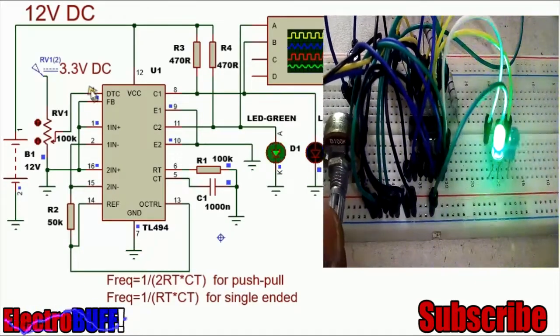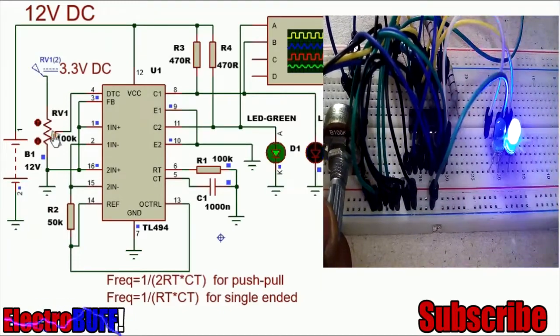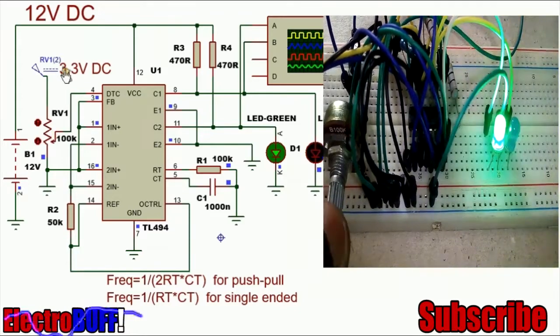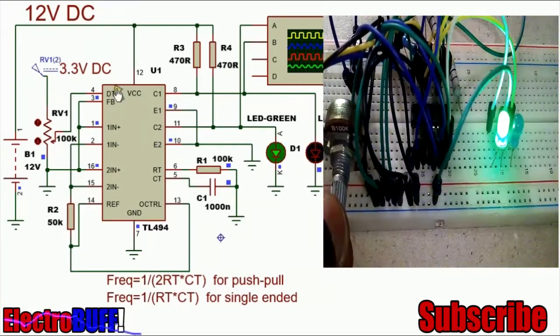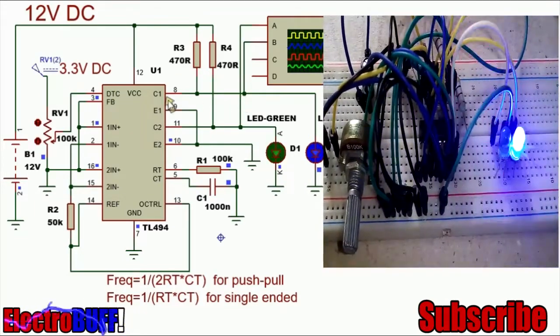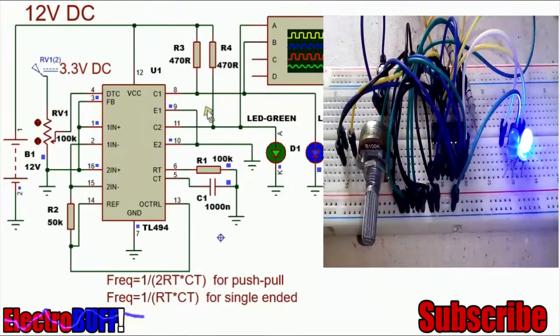The dead time pin, pin 4, you can pull it down to ground through a 1K ohms resistor. Or you can connect an adjustable potentiometer and ensure that you provide 3.3 volts on the positive side. The dead time allows you to control the time in between the turning on and off of the output transistors. And by this, you can adjust the duty cycle of both of the output drivers.